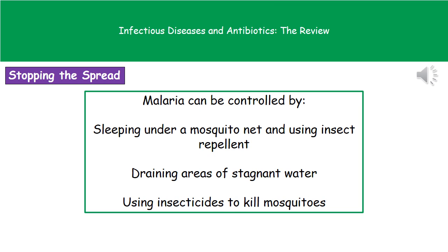Because malaria is spread by the female mosquito, we can control it by controlling the vector. We can sleep under a mosquito net and use insect repellents to avoid being bitten. We can drain areas of stagnant water, removing the mosquitoes' breeding grounds, and use insecticides to kill them.